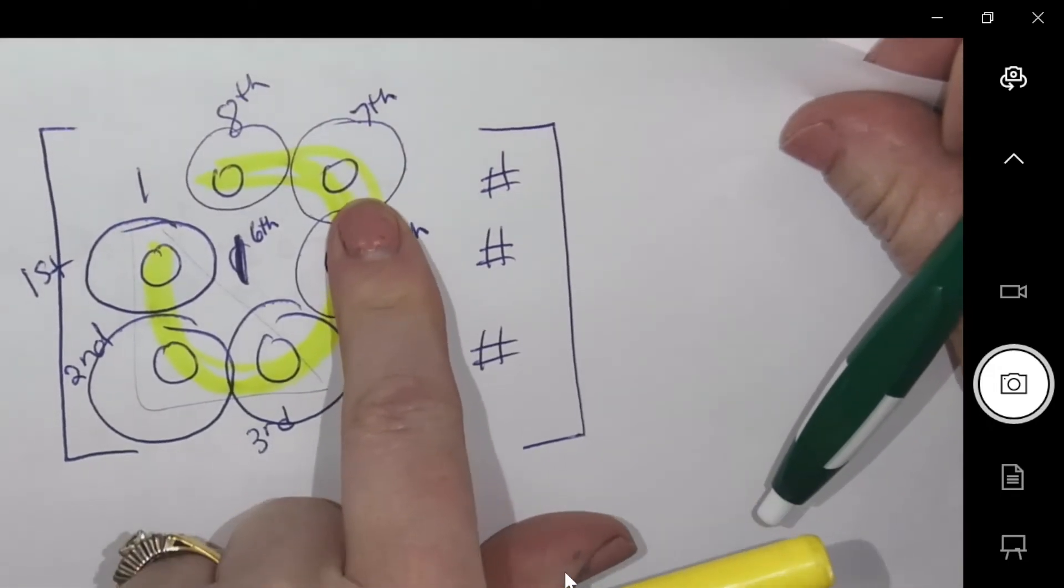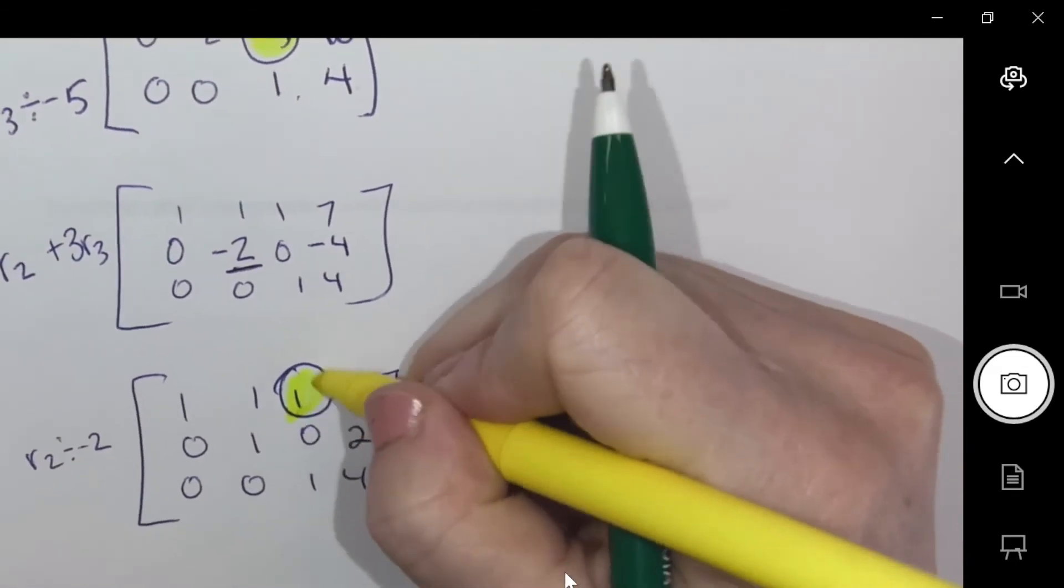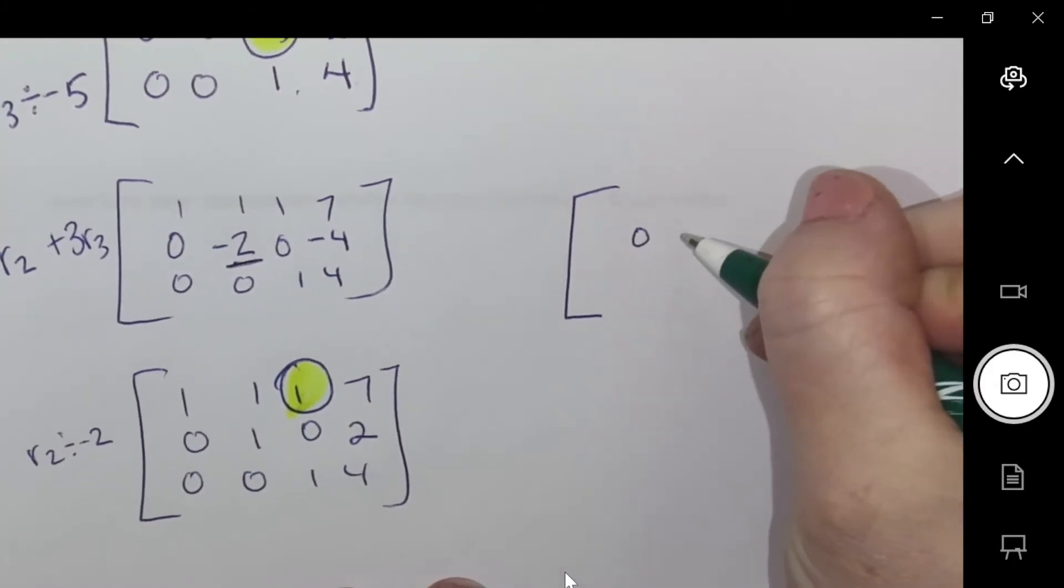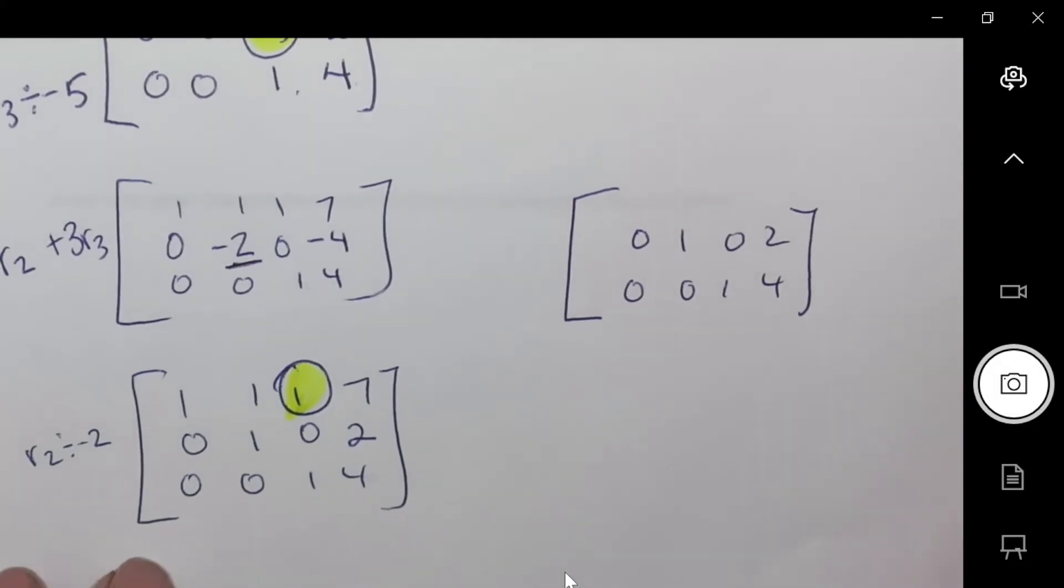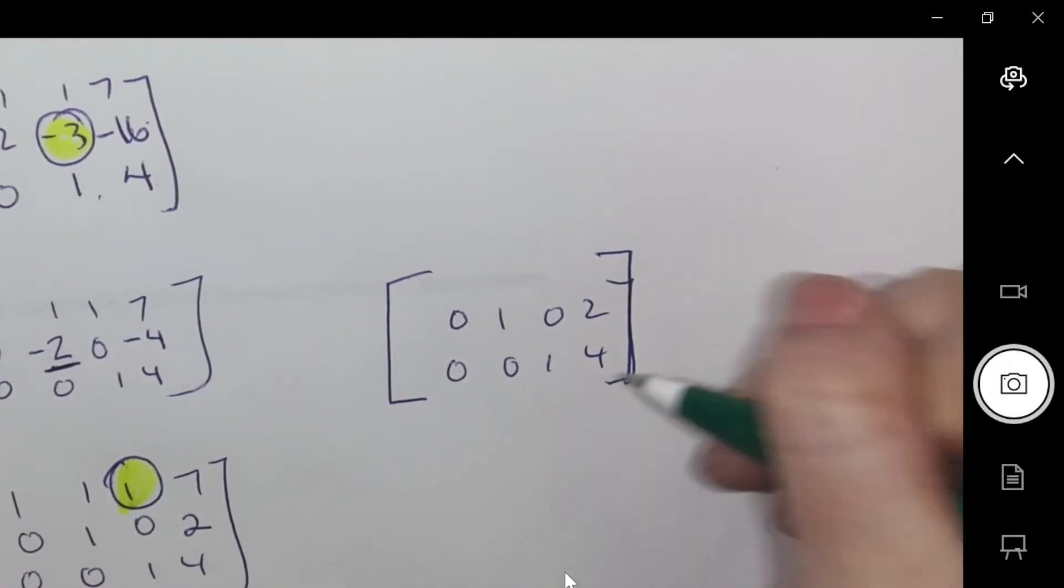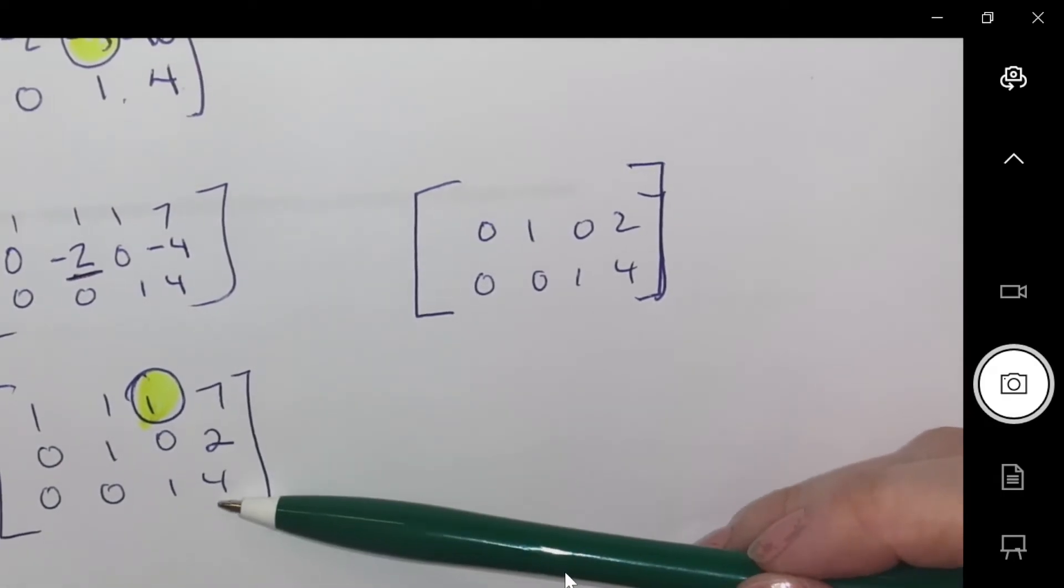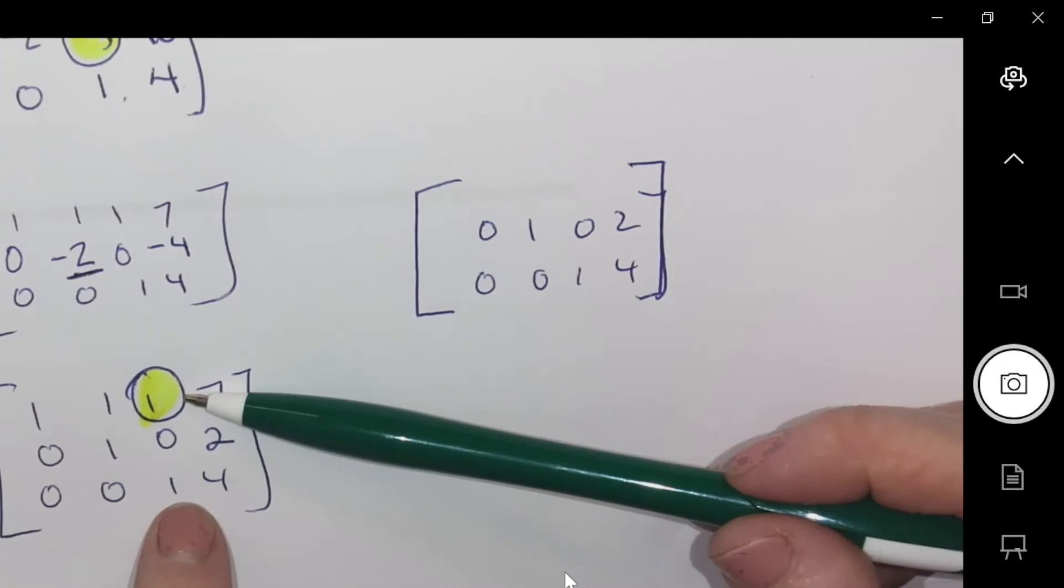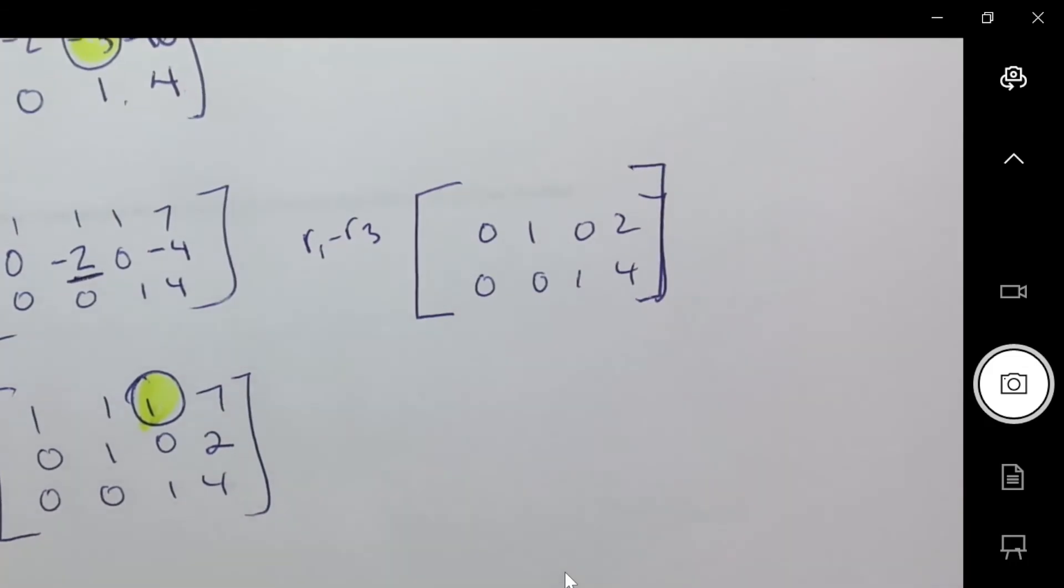Seventh. I'm going to attack this one. So I need to zero that out. So I'm going to rewrite the bottom two rows. Rewriting the bottom two rows. Okay. What do you want to do to zero it out? I'm going to have to put it with one and three. One minus three.